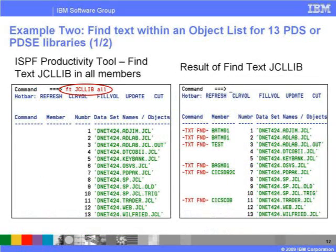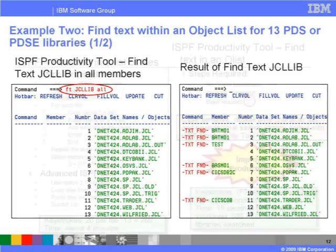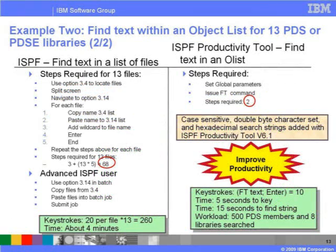In example 2, within the same object list of 13 JCL libraries, you want to find the text JCLLIB in all the members. Using a FindText command, within seconds, ISPF Productivity Tool will locate the first member with the text JCLLIB. All PDS libraries identified by the object list are searched for the text JCLLIB. The FindText command, abbreviated FT, will search datasets much faster than using standard utilities. There are several ways to search for text in PDS libraries using ISPF; however, ISPF might require over 60 steps to locate text within PDS members. Using ISPF Productivity Tool, only two steps are required, no matter how many libraries are searched.